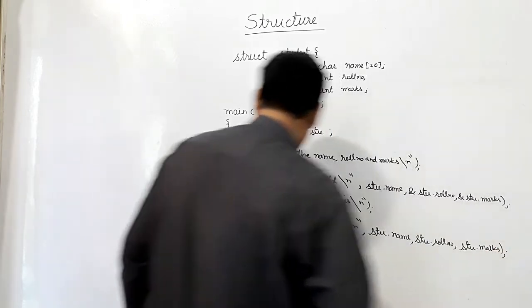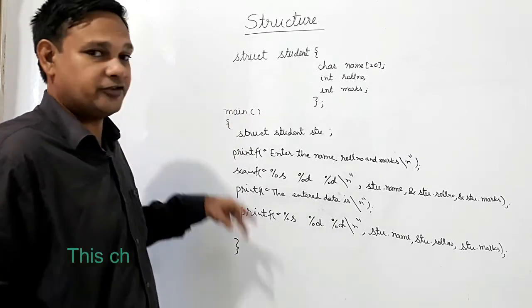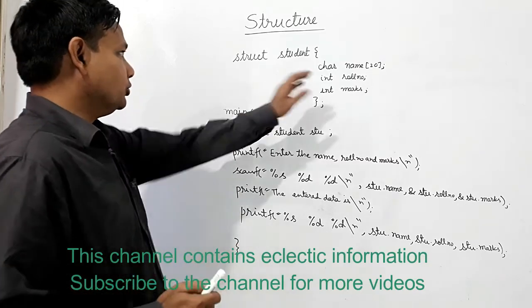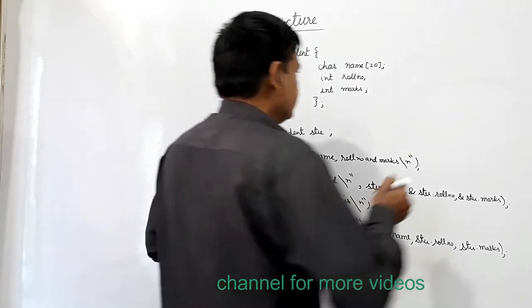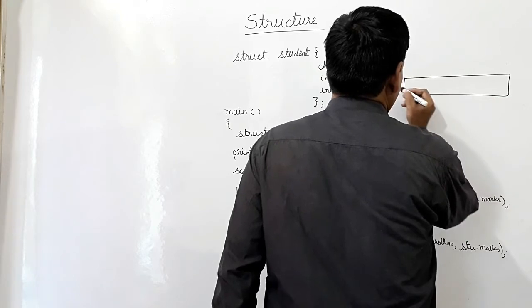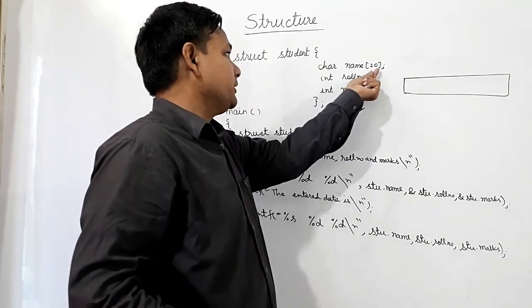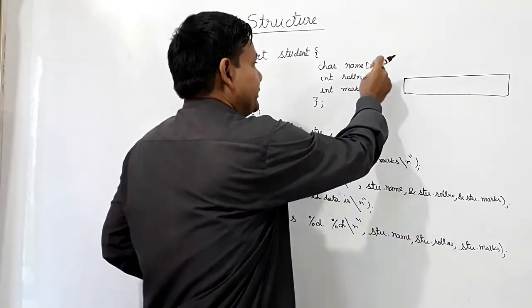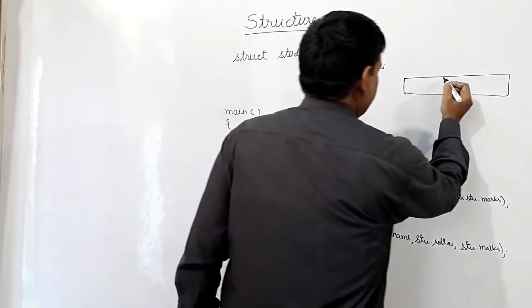So in this way, this structure will be used. One more thing - here if I want to know the size of this structure in memory. If I use GCC, 20 bytes will be reserved for this name. So 20 bytes.